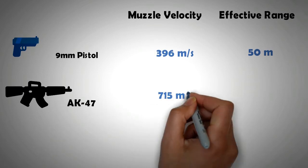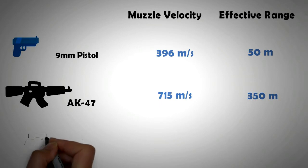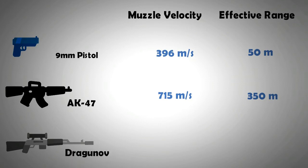By comparison, an AK-47 or Kalashnikov has a muzzle velocity of 750 meter per second, giving it an effective range of 350 meters. The Dragunov sniper rifle has a muzzle speed of 830 meter per second and effective range of 800 meters.